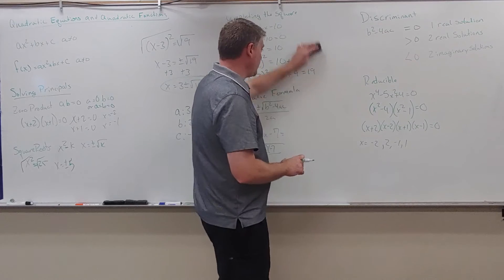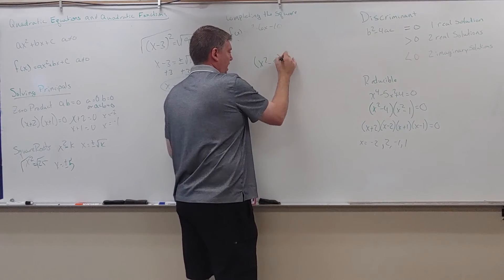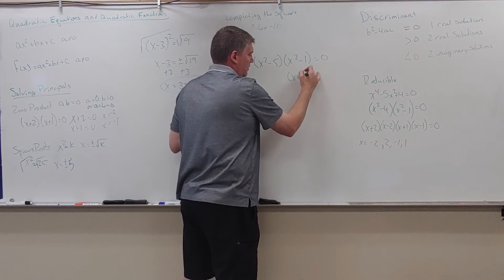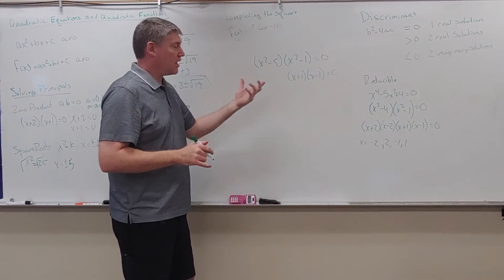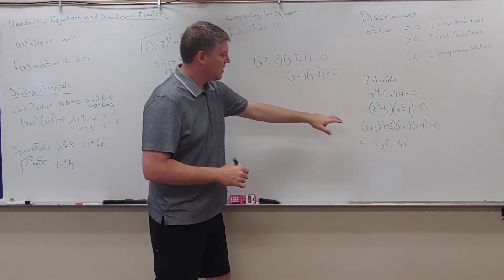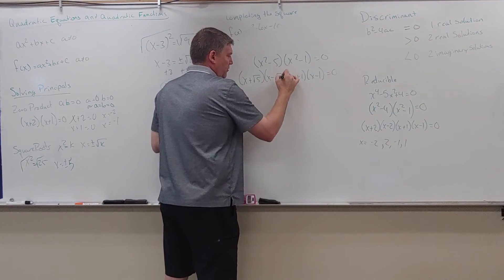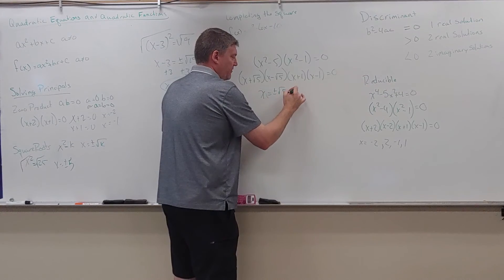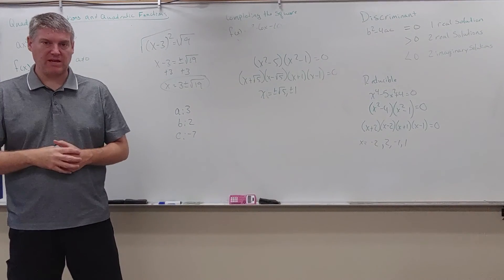A quick side note: what if I had x squared minus 5 times x squared minus 1 equals zero? Many might say x squared minus 5 is not factorable, but it is — just not into nice integers. Like x squared minus 4 factors using the square root of 4, x squared minus 5 factors into x plus the square root of 5 times x minus the square root of 5. So x equals plus or minus the square root of 5 and plus or minus 1, utilizing quadratic methods throughout.